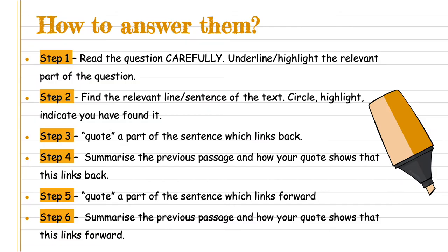So the steps. Step one and step two are much the same as you would do for any question within your RUI, prelim or exam paper. You must read the questions carefully and underline the relevant part of the question. In step two, you're going to find the relevant line or sentence mentioned in the question, go to the text and circle or highlight. This indicates to yourself that you've found it.